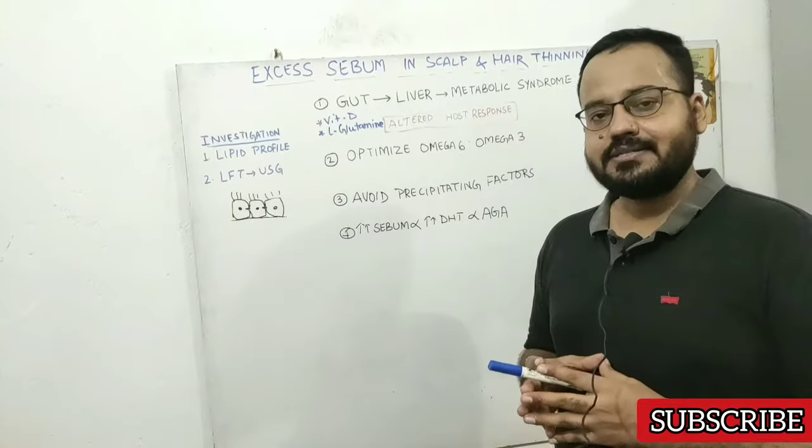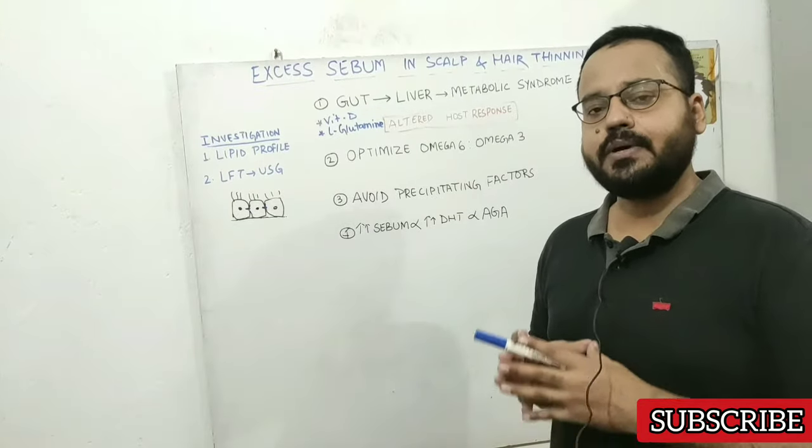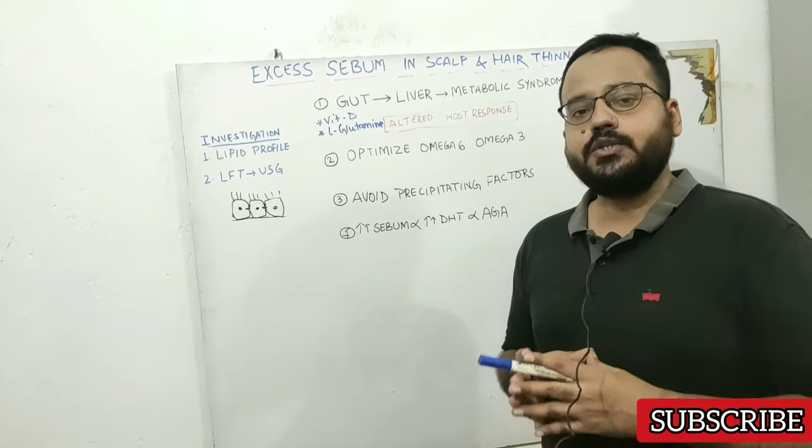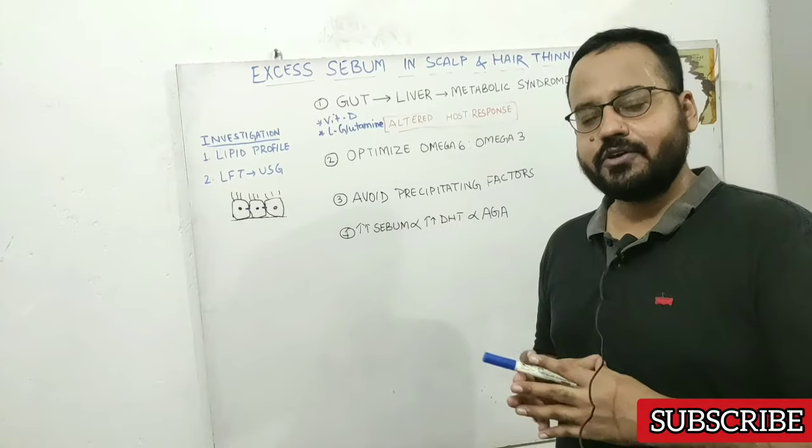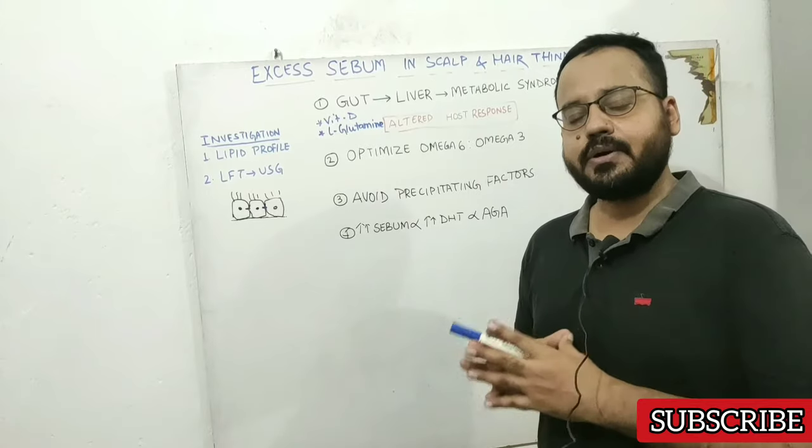So why are your sebaceous glands producing so much sebum? Why have they become uncontrolled? This has to do with your altered host response, coming from leaky gut, or in medical terms, increased intestinal permeability.